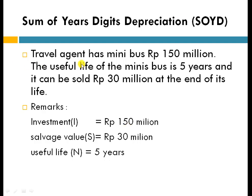To make it clear, I'm going to implement this in a case. A travel agent has purchased a minibus worth 150 million. The useful life of the minibus is five years, and it can be sold for 30 million at the end of its life. The investment is 150 million, the salvage value is 30 million, and it will last five years. Now calculate the depreciation using the SOYD.